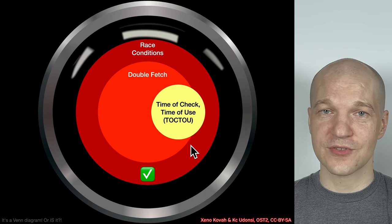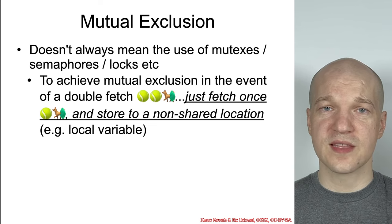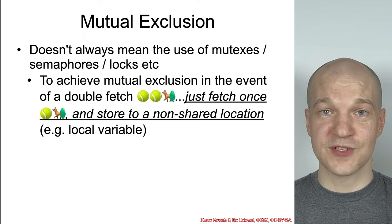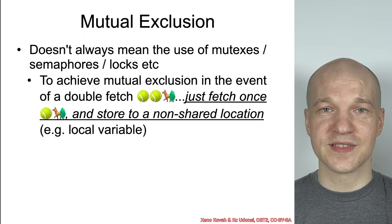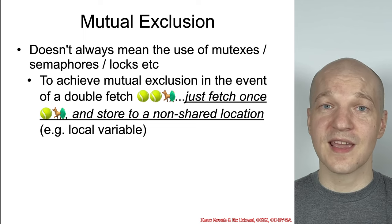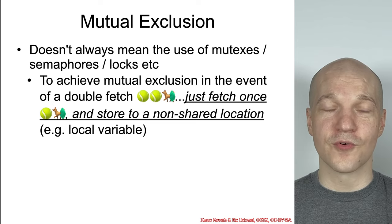Mutual exclusion does not always mean you have to use mechanisms such as mutexes, semaphores, or locking primitives. In the case of double-fetch, it suffices to basically just fetch once, store it somewhere the attacker can't manipulate it — like a local variable on your stack if you're the kernel and they're in user space, or you're some firmware and they're the kernel. You just need to store something in a non-manipulatable location. Fetch it once, then use that clean copy the attacker can't manipulate anymore. You will have successfully achieved mutual exclusion without the need for mutexes.